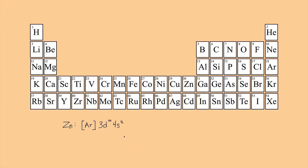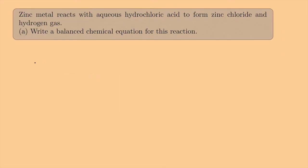What is zinc going to do? It's most likely going to want to lose the two electrons in the 4S. It has a complete 3D shell, so it doesn't really want to give up any of those. So these two 4S electrons are likely going to go, meaning zinc will be Zn²⁺ with an oxidation state of +2.